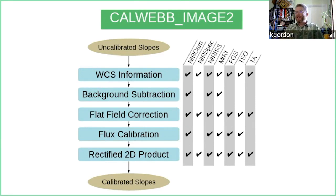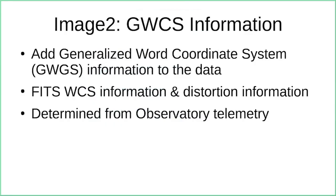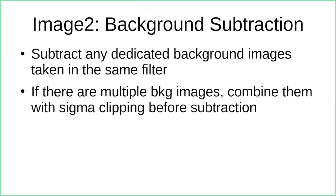Now we have uncalibrated slopes in DNs per second, so image two calibrates them. The first step adds the generalized world coordinate system to the data — equivalent to the FITS WCS and distortion information from previous observatories — determined from observatory telemetry indicating where JWST is pointing. There is an optional background subtraction step: if dedicated background images have been taken in the same filter, this performs an image-by-image subtraction, combining multiple background images with sigma clipping, done in detector coordinates to eliminate sources.